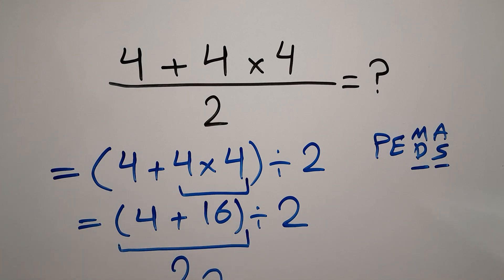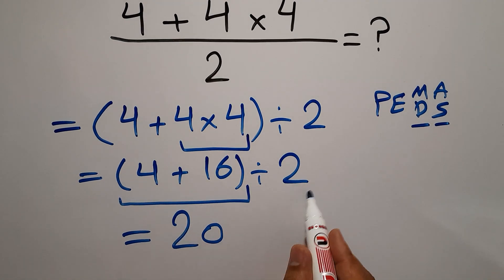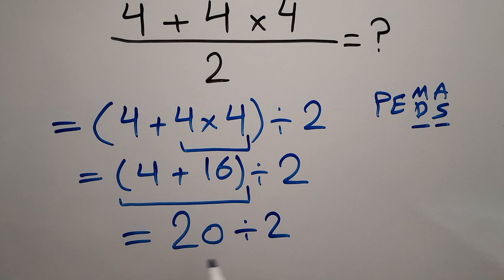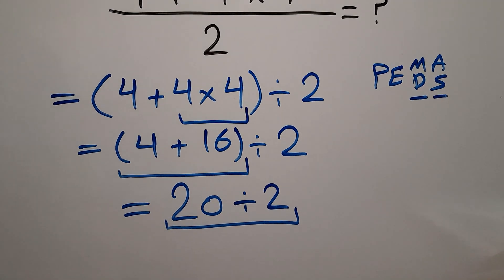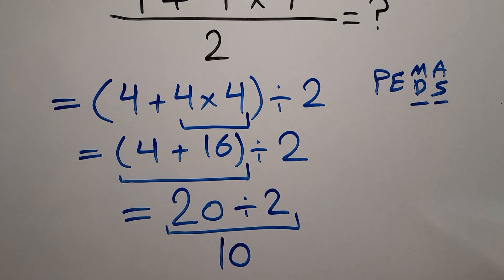So 20 divided by 2. And 20 divided by 2 is 10. Therefore, our final answer to this problem is 10.